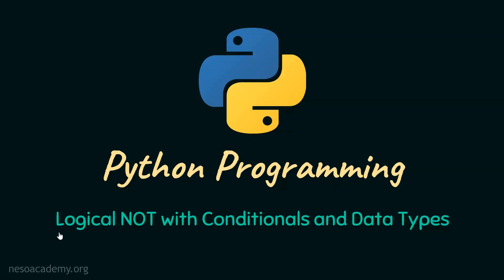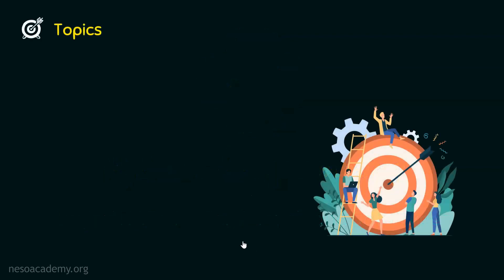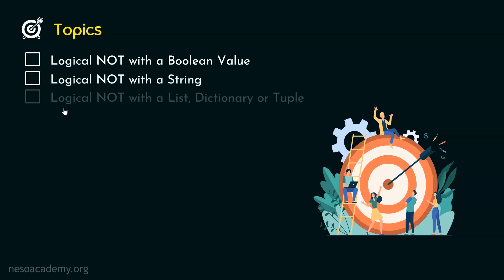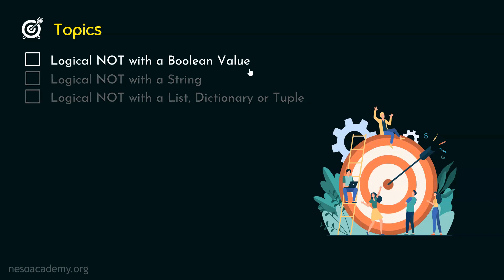In this presentation, we will understand logical not with conditionals and data types. Without any further delay, let's get started. The first topic is logical not with a boolean value. The second topic is logical not with a string. And the third topic is logical not with a list, dictionary, or tuple. Let's get started with the first topic: logical not with a boolean value.